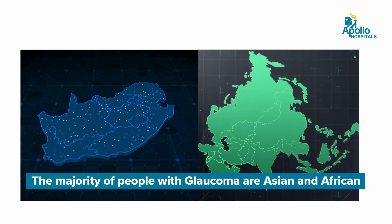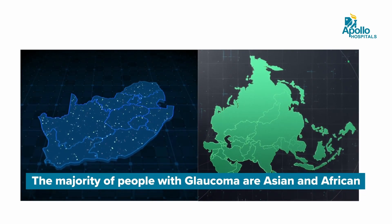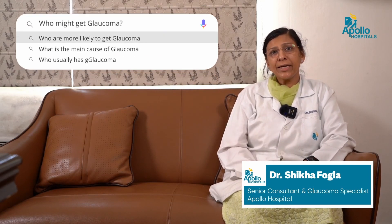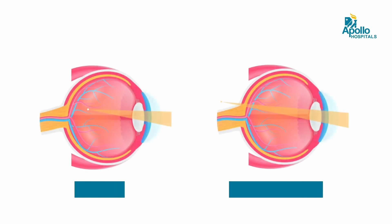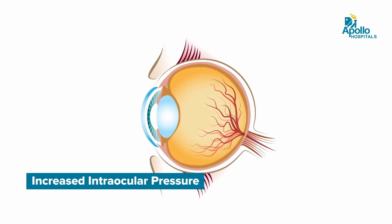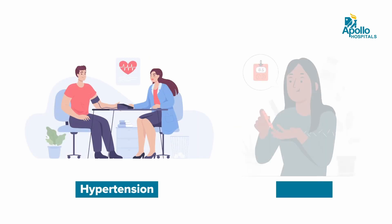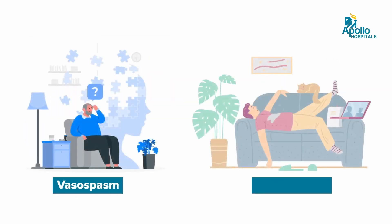It usually affects Asians and Africans. Who might get glaucoma? There are various eye conditions that make us more prone to glaucoma, like having myopia, hypermetropia and most importantly increased intraocular pressure. The non-eye conditions which cause glaucoma include increasing age and systemic conditions like hypertension, diabetes, vasospasm, and sleep apnea.